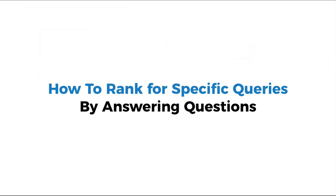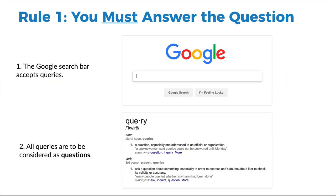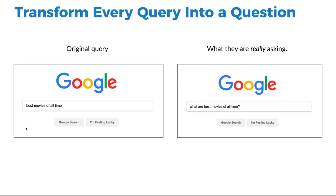Here's the major philosophy behind ranking for search snippets: you must answer the questions. Whatever people are typing into Google — keywords, search terms — you have to transform them into questions and then answer those questions. For example, 'best movies of all time' becomes 'what are the best movies of all time?' and you answer that on your webpage. 'Amazon Prime review' becomes 'what is the verdict of the Amazon Prime review?' 'Office cleaning marketing ideas' becomes 'what are some office cleaning marketing ideas?' Transform everything into questions and answer them, and you're going to be ranking in the search snippets.